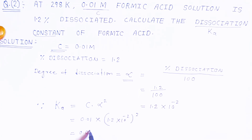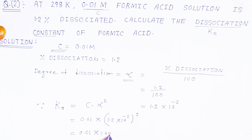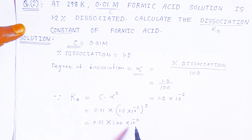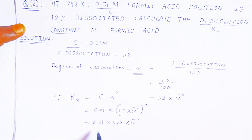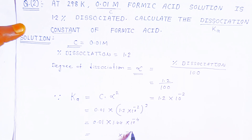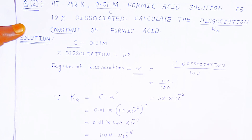We keep 0.01 as it is. Now (1.2)² = 1.44, and (10⁻²)² = 10⁻⁴. So alpha squared = 1.44 × 10⁻⁴. Now multiplying: 0.01 = 10⁻², so Ka = 10⁻² × 1.44 × 10⁻⁴ = 1.44 × 10⁻⁶.